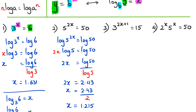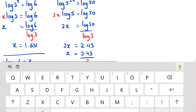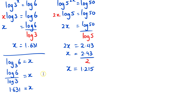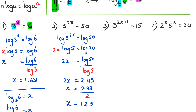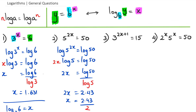For number three, I'm going to use the second method — converting to log form directly. Our base is 3, the power is 2x plus 1, and the final answer is 15. So I can rewrite this as: log base 3 of 15 equals 2x plus 1.